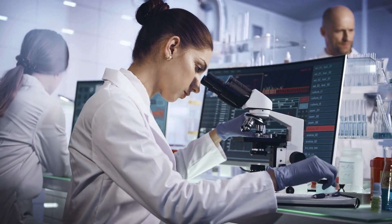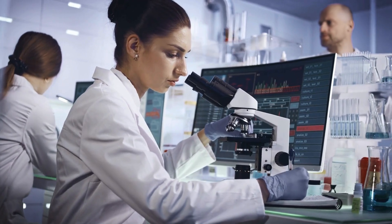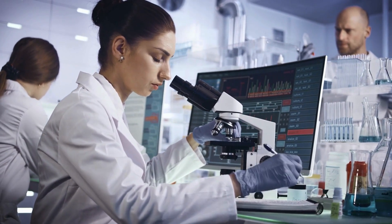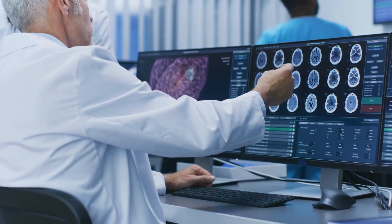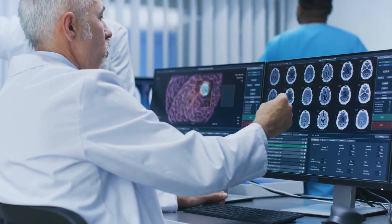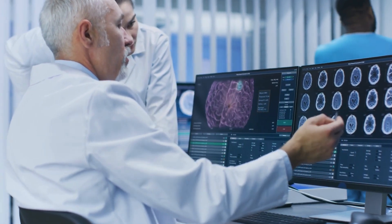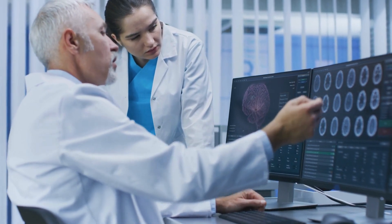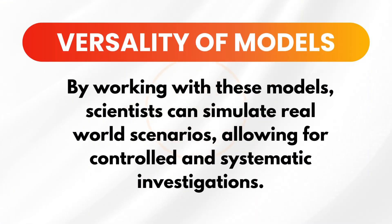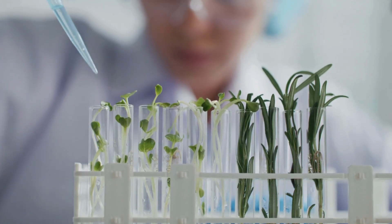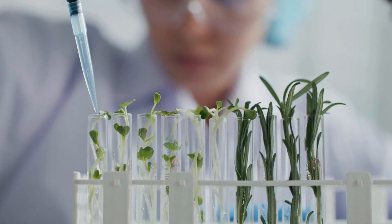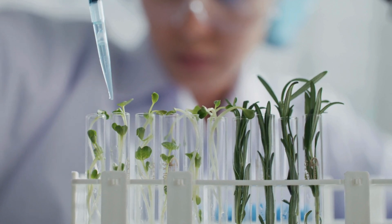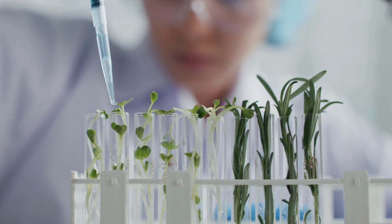Scientists harness scientific models for a multitude of reasons, each serving a critical purpose in the scientific process. One primary function of models is to serve as a testing ground for ideas and hypotheses. Scientists need to rigorously examine their theories and conduct experiments to validate their assumptions. By working with models, scientists can simulate real-world scenarios, allowing for controlled and systematic investigation. For example, a scientist interested in uncovering additional applications of carbon dioxide might work on smaller-scale models to test various concepts and hypotheses.